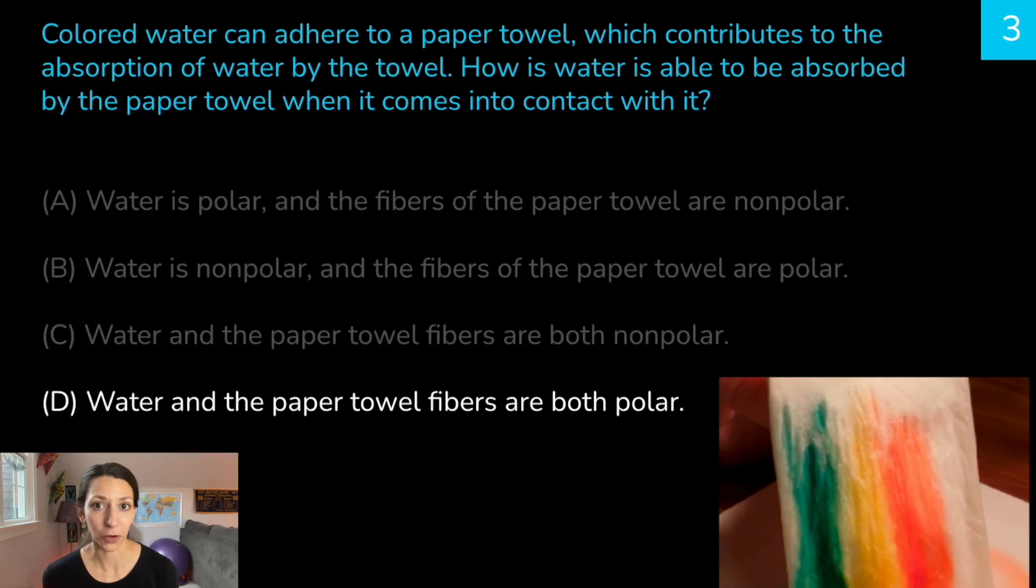Correct answer is D. Water is polar and the paper towel fibers are both polar. Usually these are made of something like cellulose, which is polar as well. So water molecules can form hydrogen bonds with the paper towel fibers because they're both polar, and then water molecules can form hydrogen bonds with each other and the fibers together, which helps absorb all of this water. It helps it be sucked up against the action of gravity - capillary action - and the colored water can rise up the paper towel.